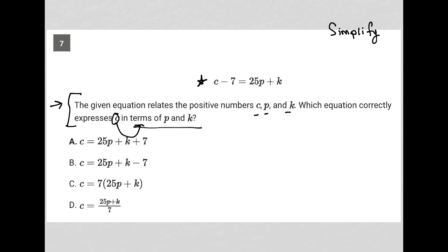All that really means is that we want C equals. So C in terms of P and K just means we want to isolate C.